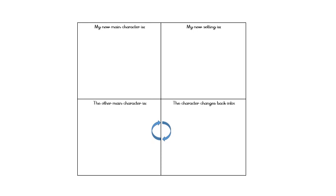You are going to complete this sheet. You'll think of what your main character is, draw a picture, and write their name. Your main character in the Princess and the Frog is the princess, but you are going to change it. Then write the new setting — in the original it was the castle, so where is your story going to take place?